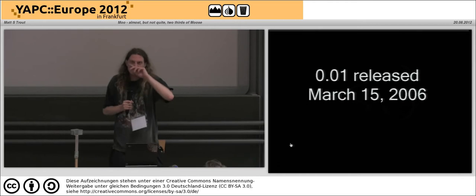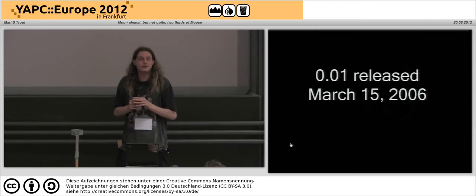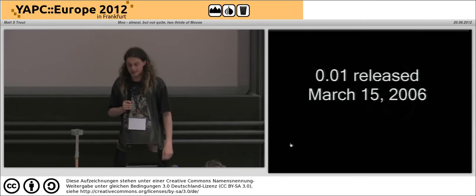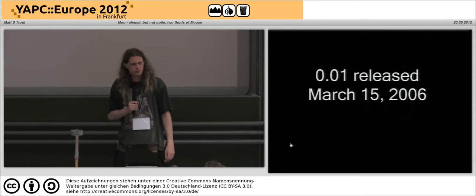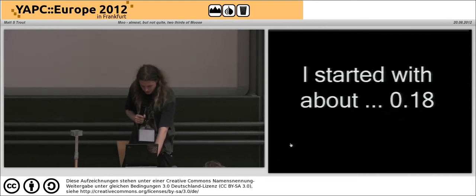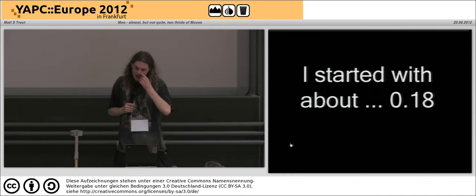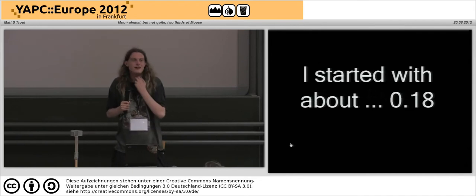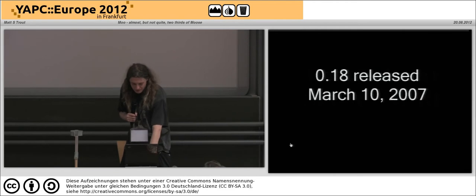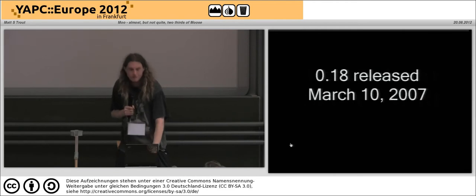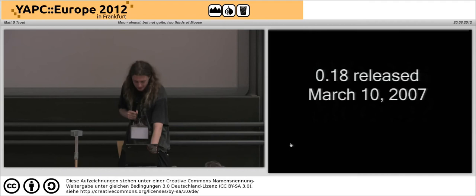0.01 of Moose came out in 2006, quite possibly before Yuval Cogman was old enough to drink, which is kind of impressive. I think I started using it around 0.18 — that's the first version I remember having — so that was early 2007.